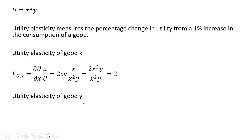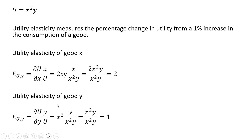Let's get the utility elasticity of good y. Similar setup — we're going to take the partial derivative of the utility function with respect to good y, multiply that by y, and divide it by utility. The partial derivative of the utility function with respect to y is just x squared. We're multiplying that by y, as shown in the formula, and dividing it by the utility function, where u is given by x squared times y.